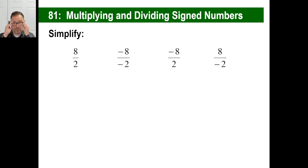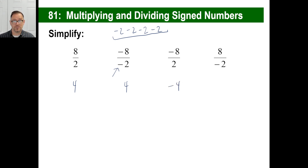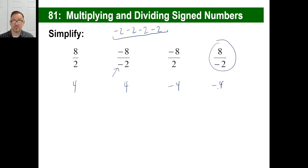Now let's look at division — and remember, every fraction is a division problem. Eight divided by two: same sign, answer is positive four. Negative eight divided by negative two: same sign, answer is positive four. You can make logical sense of that — how many negative twos fit into negative eight? Four of them. Negative eight divided by two: different signs, the answer is negative four. And eight divided by negative two: different signs, so the answer is negative four.